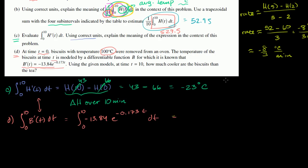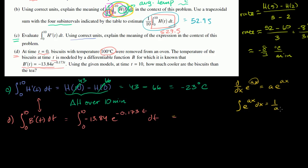We know that the derivative of e to the ax is a times e to the ax — just from the chain rule, the derivative of the inside is a, multiplied by the derivative of e to the x, which is e to the x. Or equivalently, the integral of e to the ax dx equals 1 over a times e to the ax plus C. You can verify this by taking the derivative.